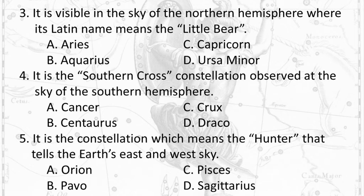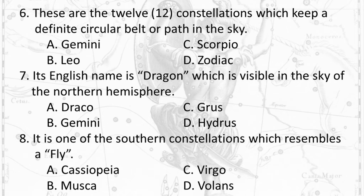Question 5: It is the constellation which means 'the Hunter' that tells the Earth's east and west sky. A. Orion B. Pavo C. Pisces D. Sagittarius.